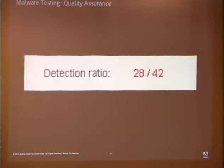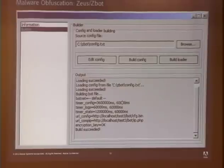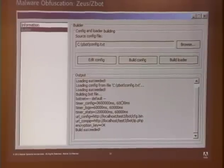The bad guys look at the ratio of non-detection — in this case 14 out of 42 AVs don't detect the sample. If that number is too low, they go back to the drawing board and add different kinds of encryption, different kinds of packing, or layers of packing in order to make their malware more effective. This is a screenshot of the Zeus or ZBot trojan — if the malware guys were unhappy with the QA step of how many AVs detected their piece of malware, they'd go back and add different kinds of encryption or packing.